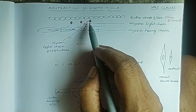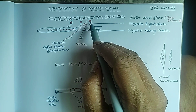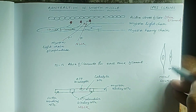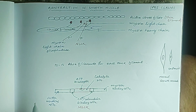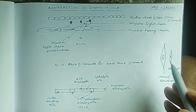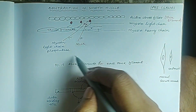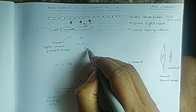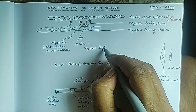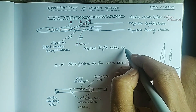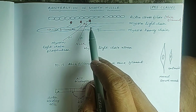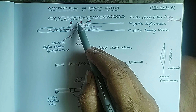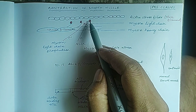Myosin phosphorylation is required. When myosin is phosphorylated, it gets the energy to bind with actin, and actin-myosin binding results in the contraction of the smooth muscle. One enzyme — myosin light chain kinase (MLCK) — is essential for this. This enzyme phosphorylates the myosin light chain.